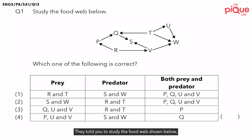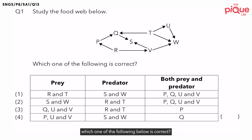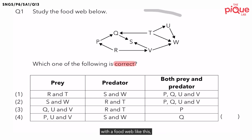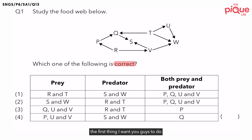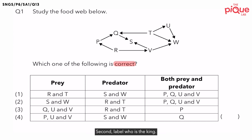Question 1. They told you to study the food web shown below, and they want us to find out which one of the following below is correct. Now, whenever you tackle questions with a food web like this, the first thing I want you guys to do is to label these two things. First, label who is the food producer. Second, label who is the king.